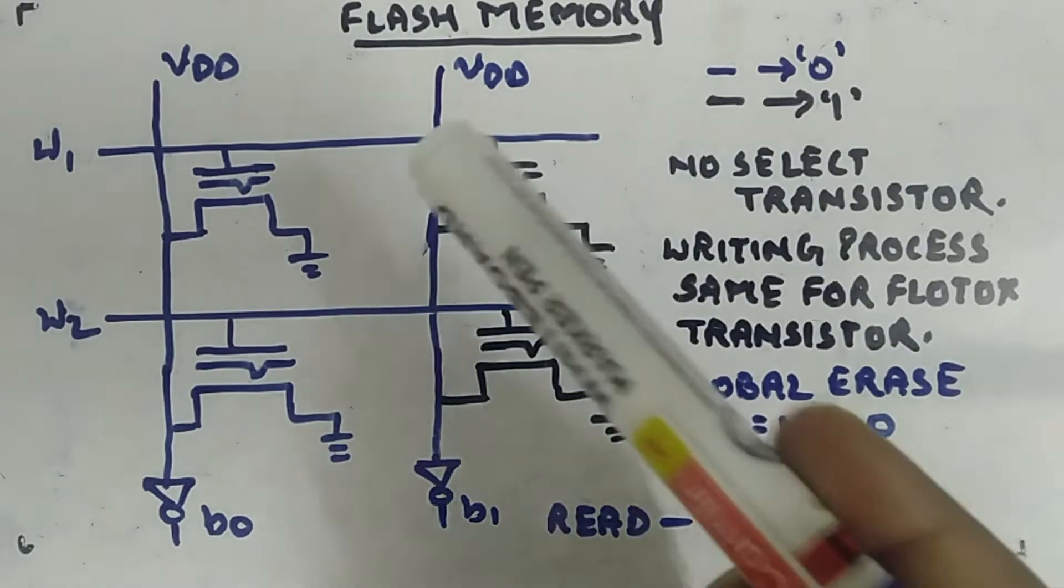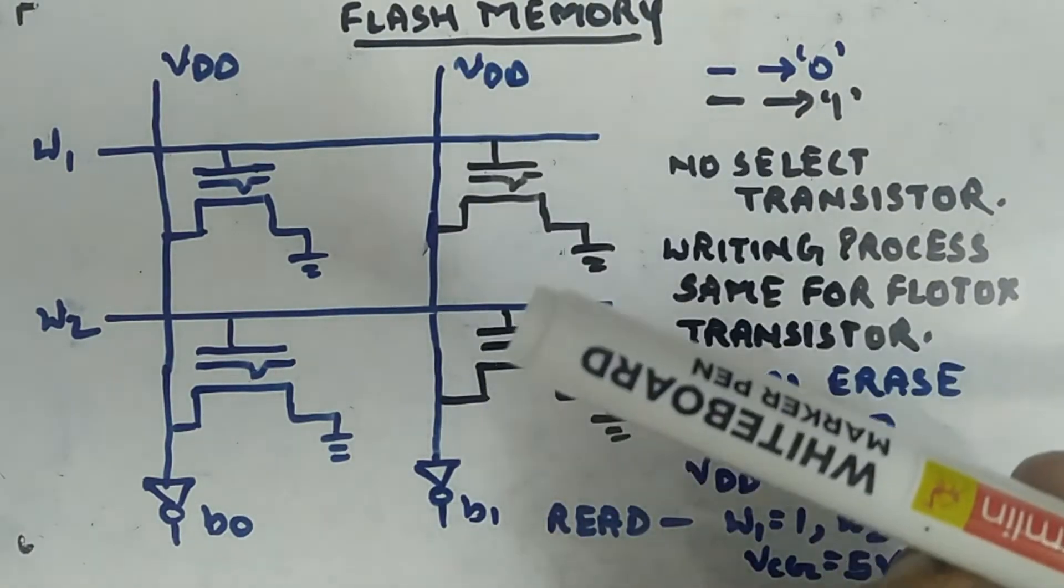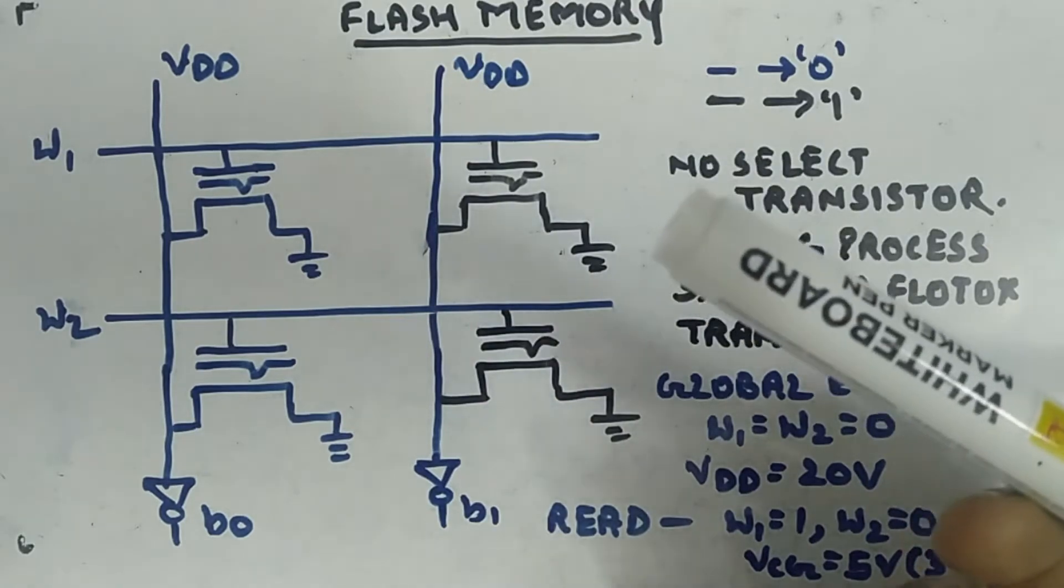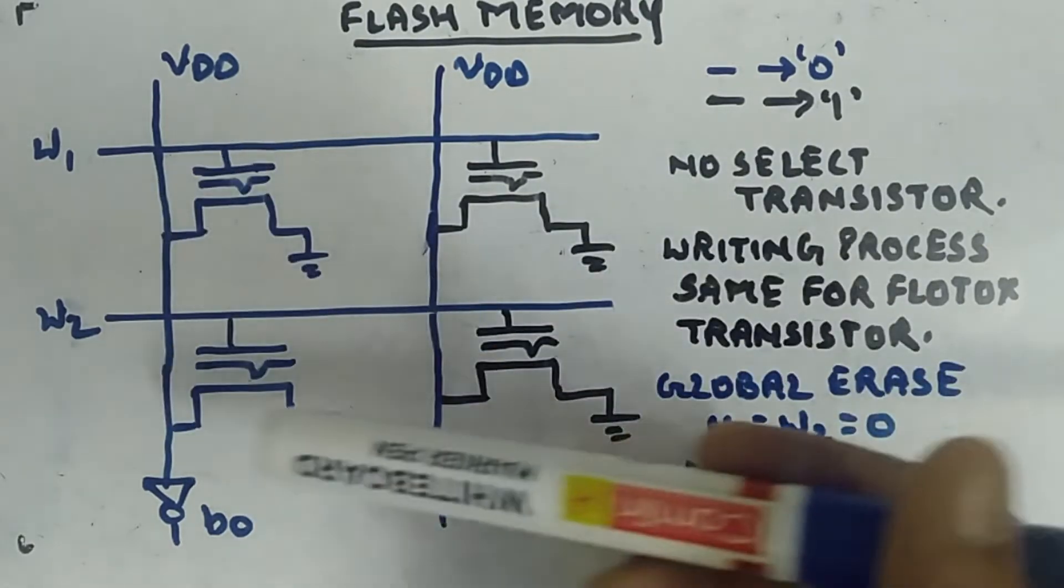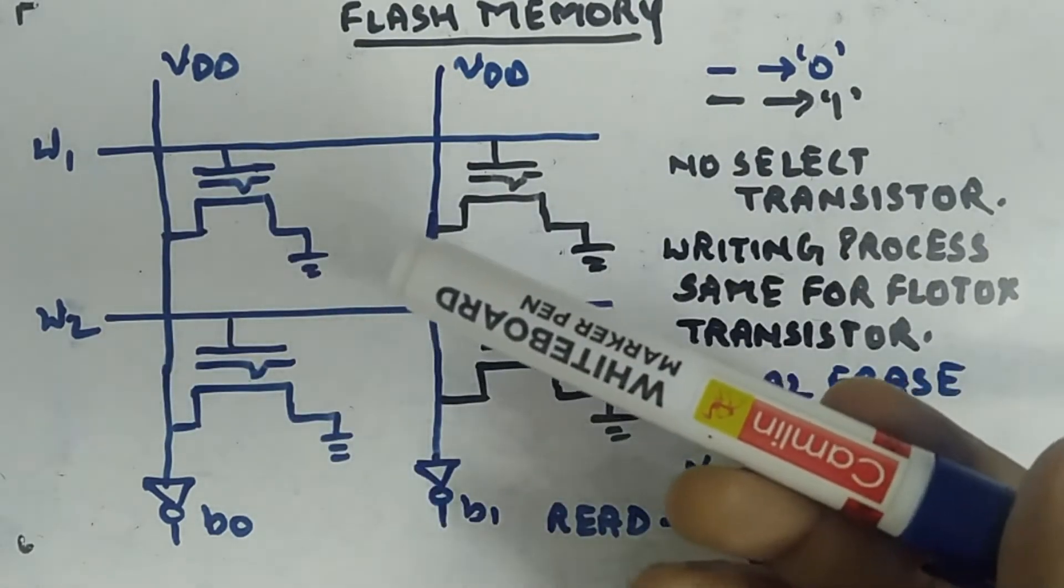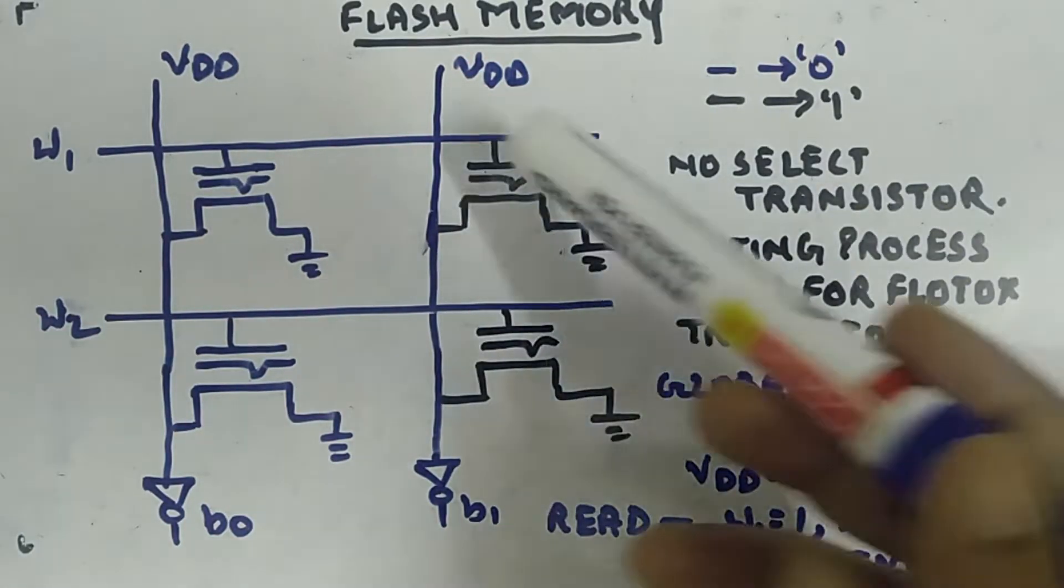Here I'm explaining flash memory. Flash memory also uses flotox transistor, with just a slight difference - it is not using a select transistor.